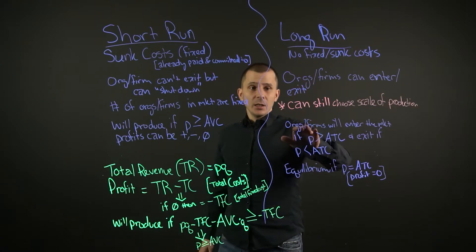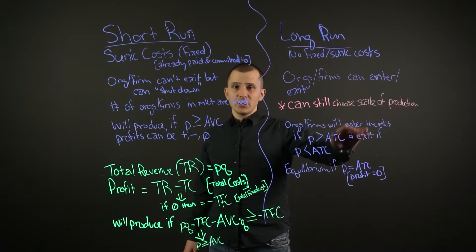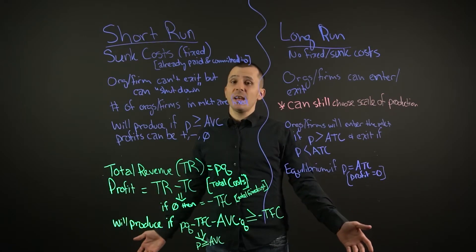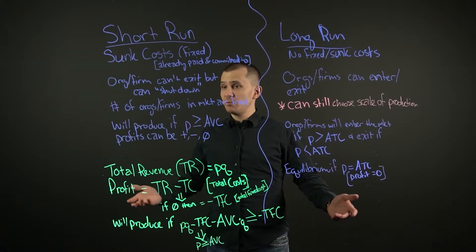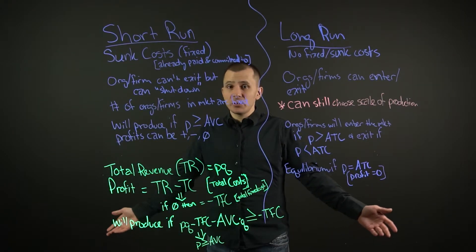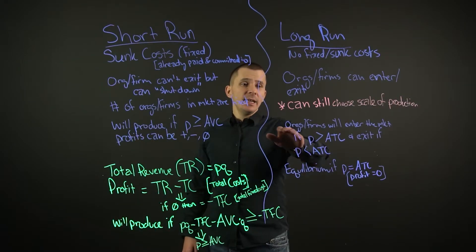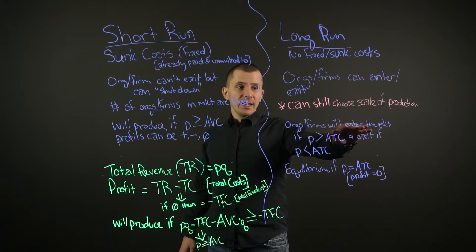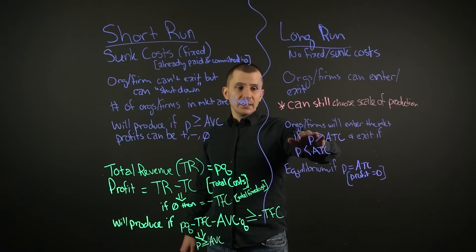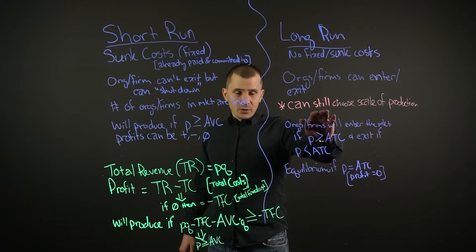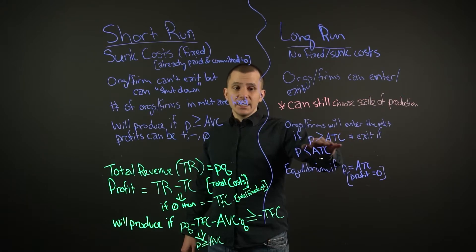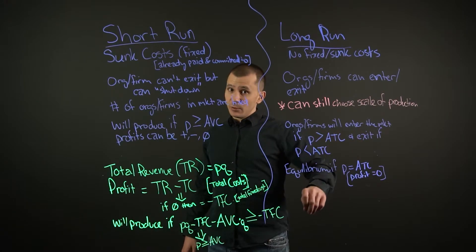Over here, we have that the long run situation can still choose the scale of production, such as what size of factory that they want to lease, purchase, or build. And organizations or firms will enter the market if price is greater than the average total cost and exit if price is less than the average total cost.